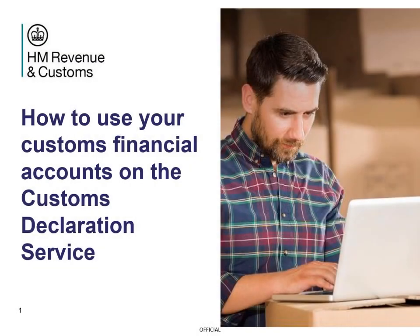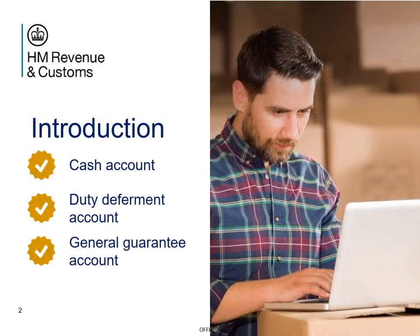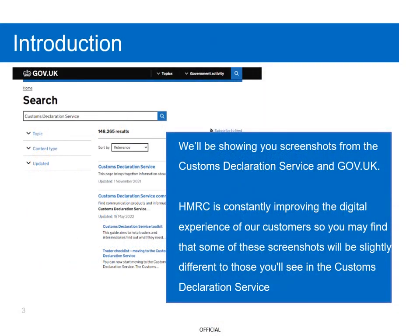Thank you for joining this webinar. Today we will be looking at how to use your Customs Financial Accounts, also known as the Financial Dashboard, including the following main accounts: Cash Account, Due to Deferment Account, and General Guarantee Account. Please note that throughout this video we will be using dummy data. We will be showing you screenshots from the Customs Declaration Service and GOV.UK. Please note that HMRC is constantly improving the digital experience of our customers, so you may find that some of these screenshots will be slightly different to those you'll see in the Customs Declaration Service.